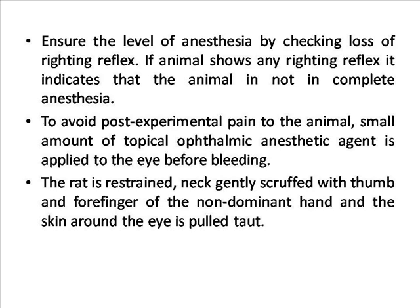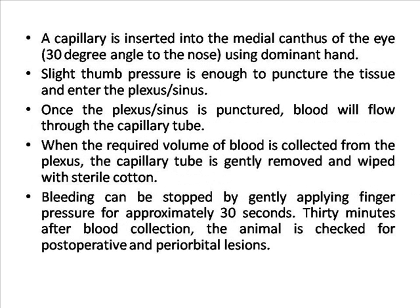The rat is restrained, neck gently scruffed with thumb and forefinger of the non-dominant hand, and the skin around the eye is pulled taut. A capillary tube is inserted into the medial canthus of the eye using the dominant hand. Slight thumb pressure is enough to puncture the tissue and enter the plexus. Once the plexus is punctured, blood will flow through the capillary tube. When the required volume of blood is collected, the capillary tube is gently removed and wiped with sterile cotton.